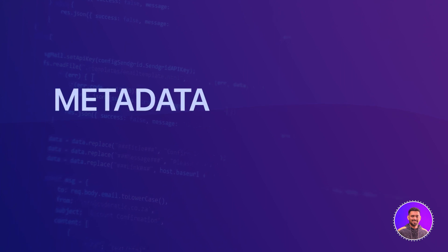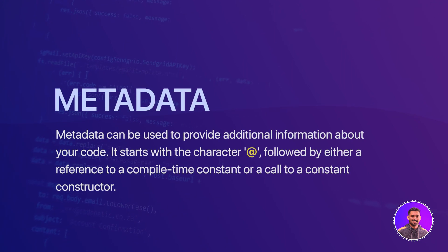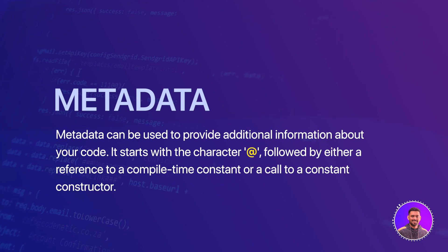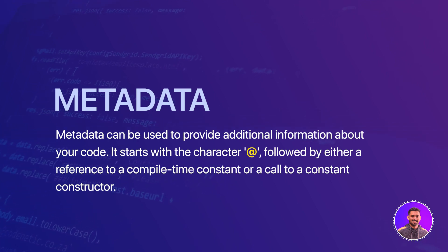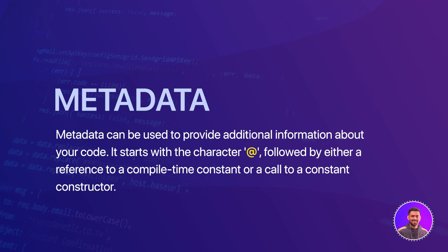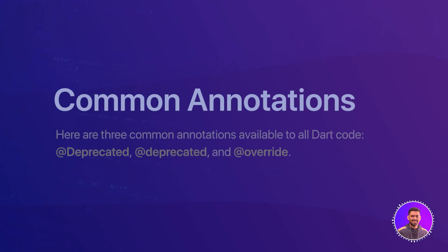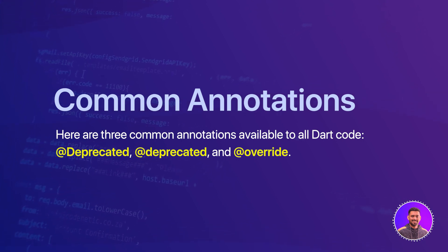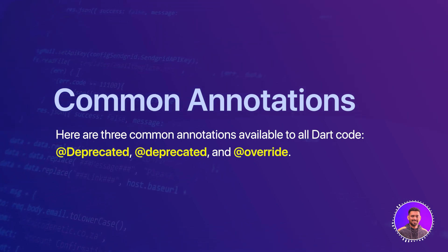First let's talk about metadata. In Dart, metadata can be used to provide additional information about your Dart code. It starts with the at-sign followed by either a reference to a compile-time constant or a call to a constant constructor. Here are three common annotations available to all Dart code: @deprecated, @deprecated, and @override. Let's look into an example.